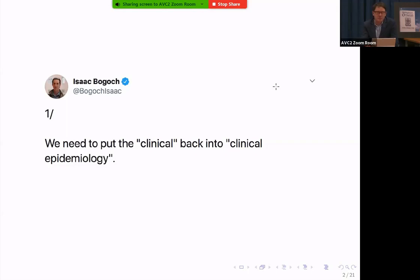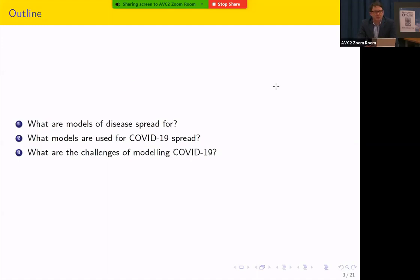So a quick outline. I'm told with short talks you shouldn't give an outline, but I thought it might be helpful anyway. We'll talk about three things. Probably the second one in more detail. But the first one is what are the models of disease spread for? And here when I talk about spread, I'm generally going to be talking about spread in a population. And it's only later on that I'll talk briefly about spatial spread, which of course is often what spread conjures up in our minds. So what do they be used for? Then also what models have been used for COVID-19 spread? And that's where I'll spend the bulk of my time. And then we'll talk a little bit about what the challenges are in modeling COVID-19.